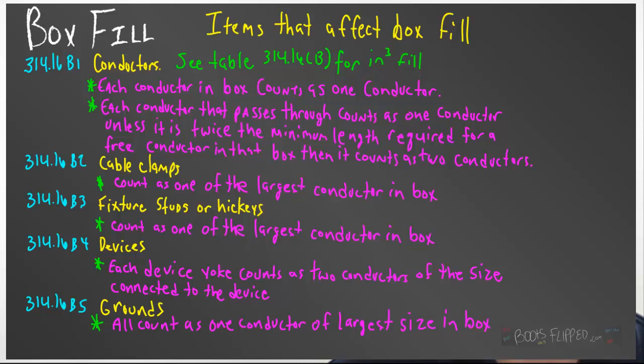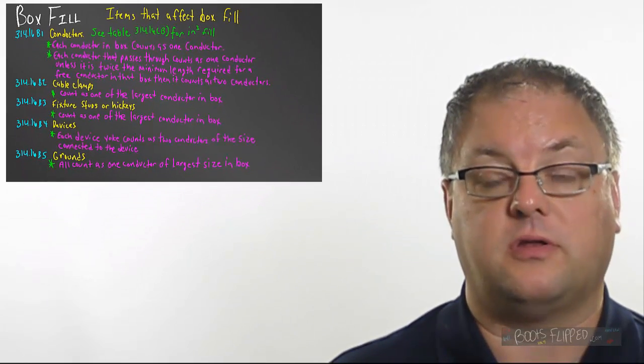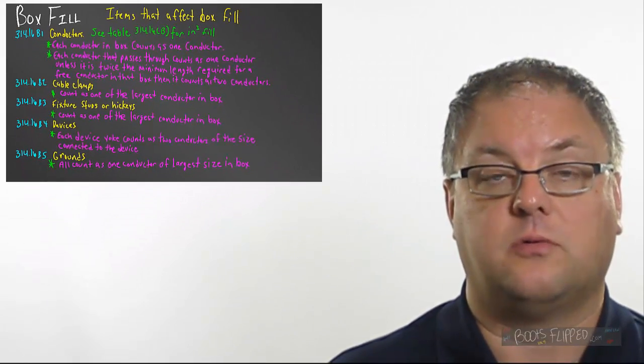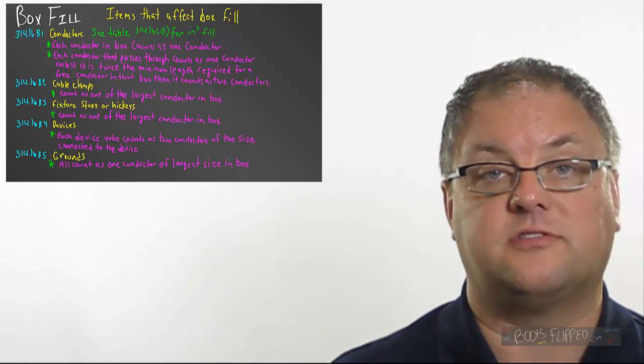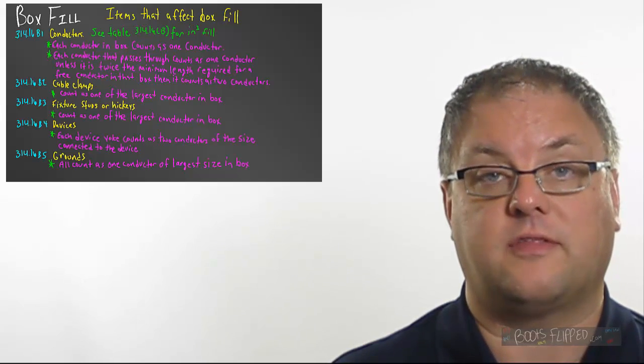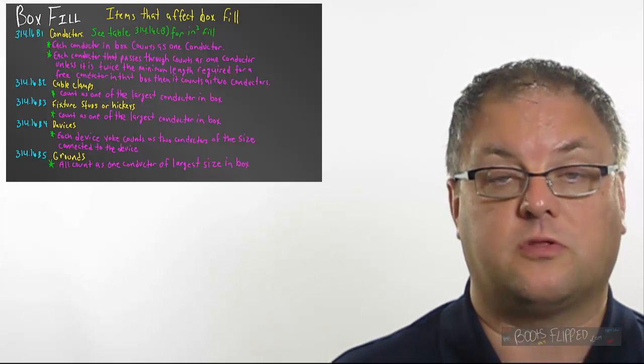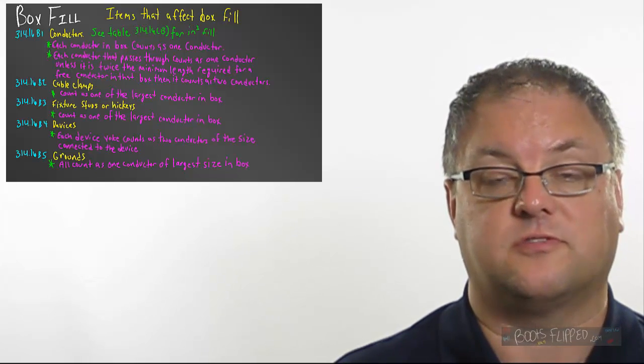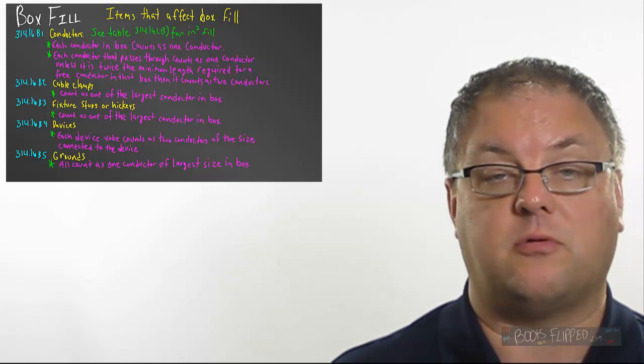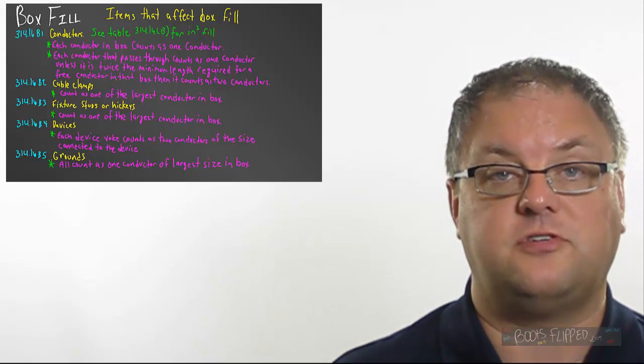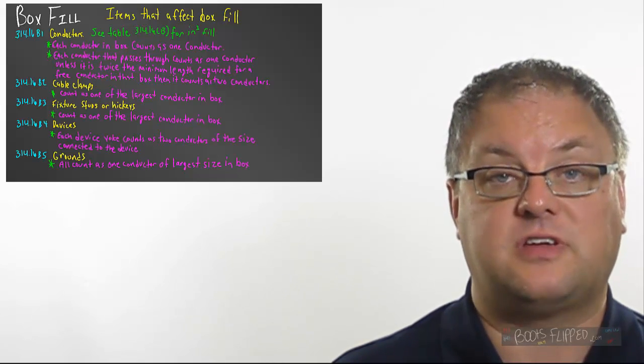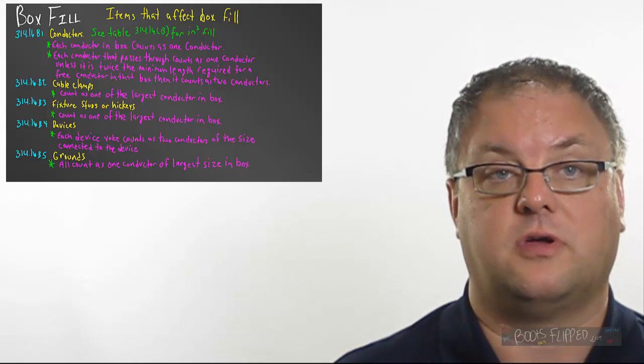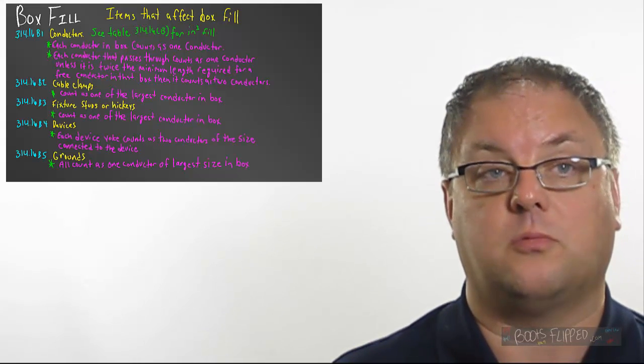This code article also tells us that every conductor counts as one conductor, whether it comes out of the box or it passes through the box. Now, if we do loop our conductors through the box, which you'll see in a lot of commercial applications, if that conductor is twice as long as the conductor length that's required to meet code, which we learned last time was six inches of conductor from where it enters the box, so that would be six inches times two inches, we would have 12 inches of conductor. If that is the case, then you have to count it as two conductors.